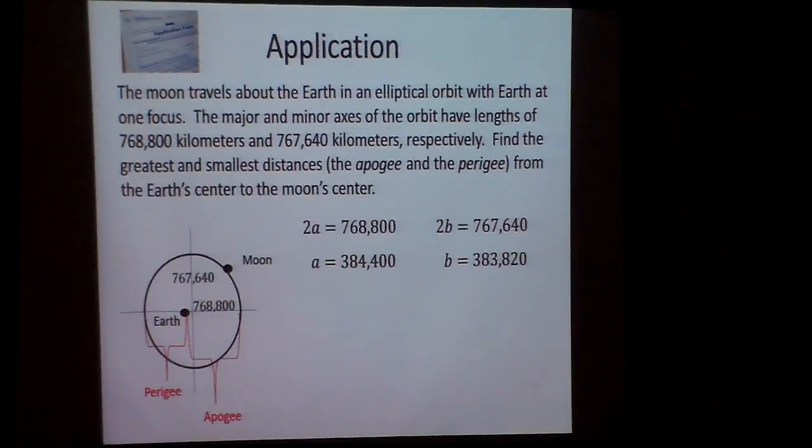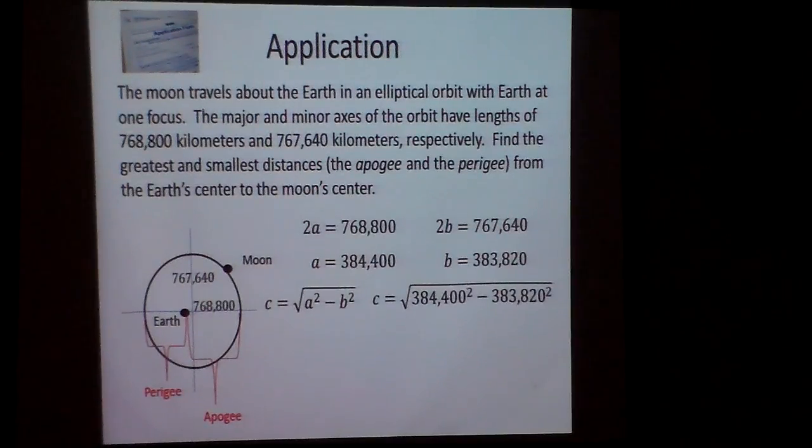Now remember, I can find C by taking A squared and minusing B squared. So those are big numbers. Definitely hope you got a calculator today. And if you square those numbers to square root in it, we find C is 21,108 kilometers.